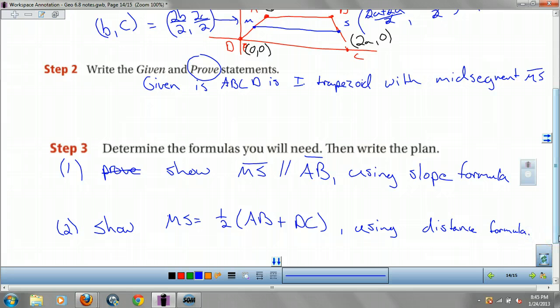Use your distance formula. You'd find ms, AB, and DC. Plug them back into that equation and show that it works. We don't have to do that because it just wants you to write the plan.